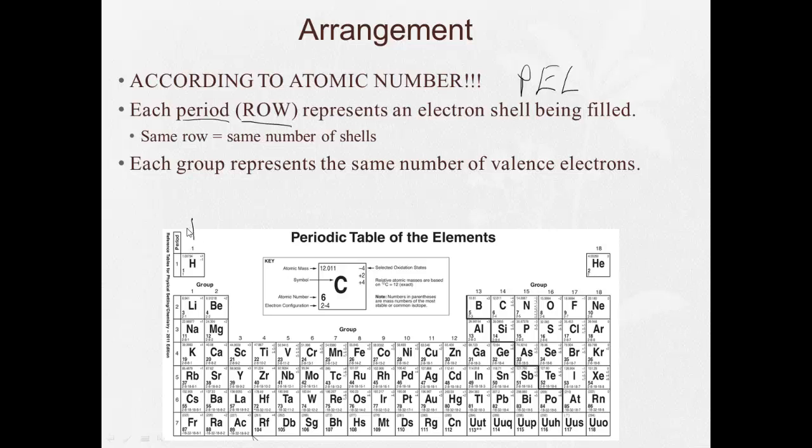Each group, the columns - so groups are columns - represents having the same number of valence electrons. And it should be plain to see here, if we look at the electron configurations here, the last number for all of these are four. The last number for all of these are three.